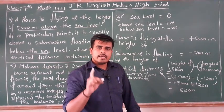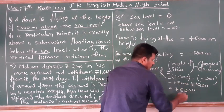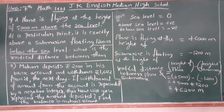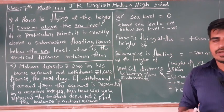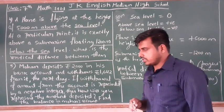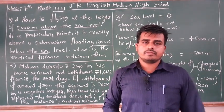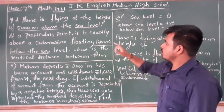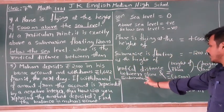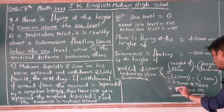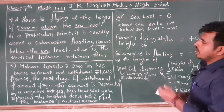We give the sign of the greater number. Among 5000 and 1200, the greater one is 5000, which is positive. Therefore the answer is plus 6200 meters. The vertical distance between the plane and submarine is 6200 meters. If you don't understand anything, just rewind the video — it's very easy.